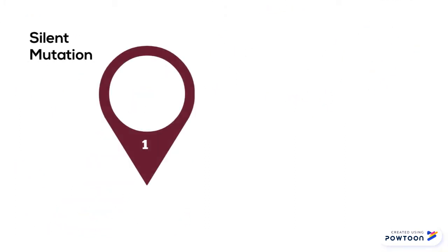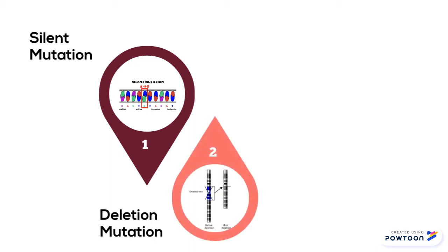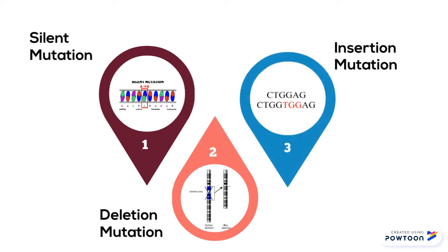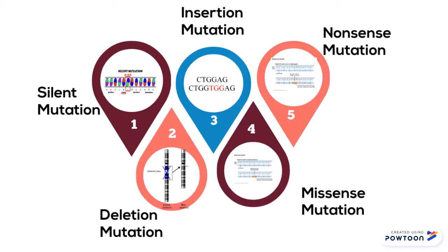To name a few types of mutations: there is the silent mutation, which leads to the production of the same protein — it is a single nucleotide change that doesn't have much of an effect. There is deletion mutation, which is the deletion of a base pair. There is insertion mutation, which is the insertion of a base pair. There is missense mutation, which is a single base pair substitution. And nonsense mutation, which gives an early stop codon.